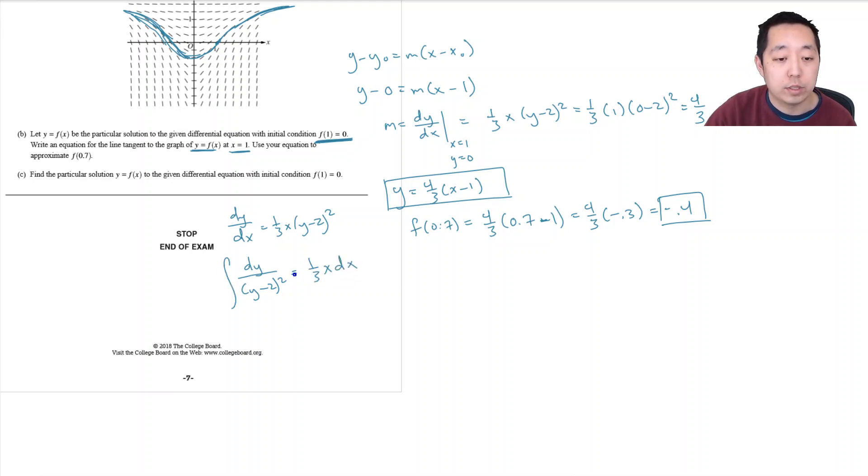Then I integrate both sides. The right side is pretty easy. It's one third x squared over two plus c. And this side, if you did a u substitution for y minus two, this is really y minus two to the negative two. And so when I do sort of the power rule, that becomes I add one. So it becomes y minus two to the negative one divided by negative one, or that's negative one over y minus two. So this side becomes negative one over y minus two.